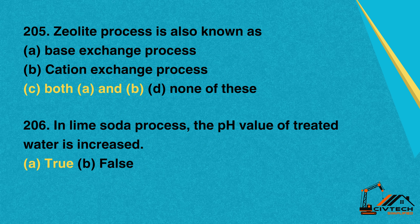Question 205: The zeolite process is also known as. A. Base exchange process. B. Cation exchange process. C. Both A and B. D. None of these. Correct option: C. Both A and B.